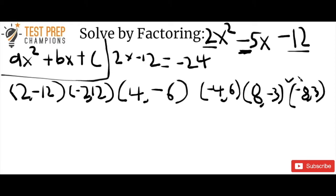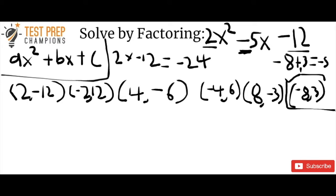If we do negative 8 plus 3, we get negative 5. This is what we were really interested in finding — we've got our golden ticket with negative 8 and 3. So that's our first two steps. The next step is to go back and pay attention to the a term, which in our equation is 2.